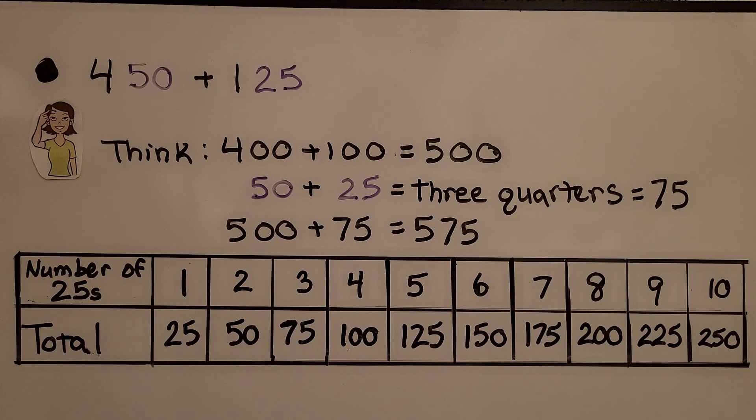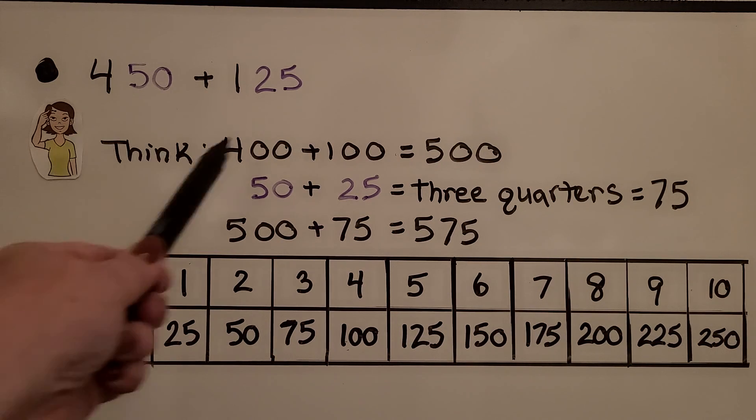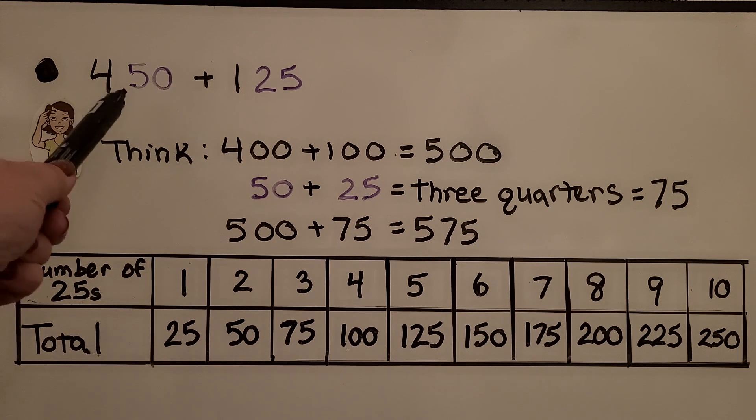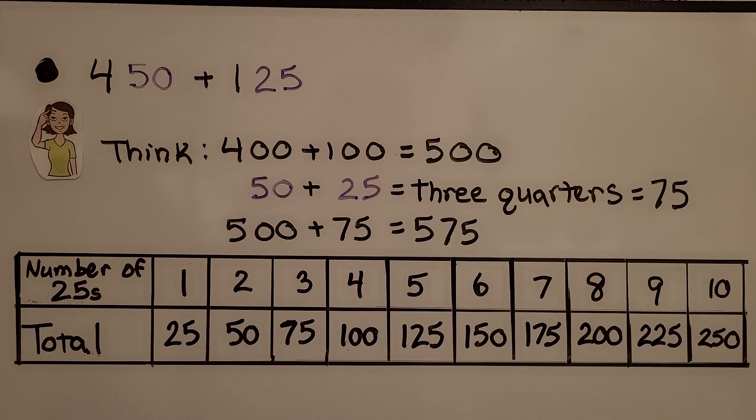If we need to add 450 plus 125, we add the hundreds. We think 400 plus 100 is 500. Then we have a 50 and a 25, which would be like three quarters. Two quarters and one quarter, which is equal to 75 cents. So that's 75. We have 500 plus 75. That's 575.